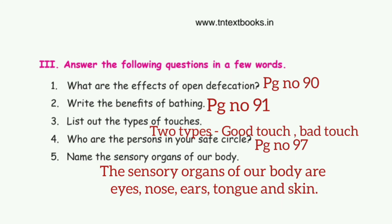The persons in your safe circle are: mother, grandpa, grandma, sister, brother, and teacher. Fifth question: name the sensory organs of our body. The answer is: the sensory organs of our body are eyes, nose, ears, tongue, and skin.